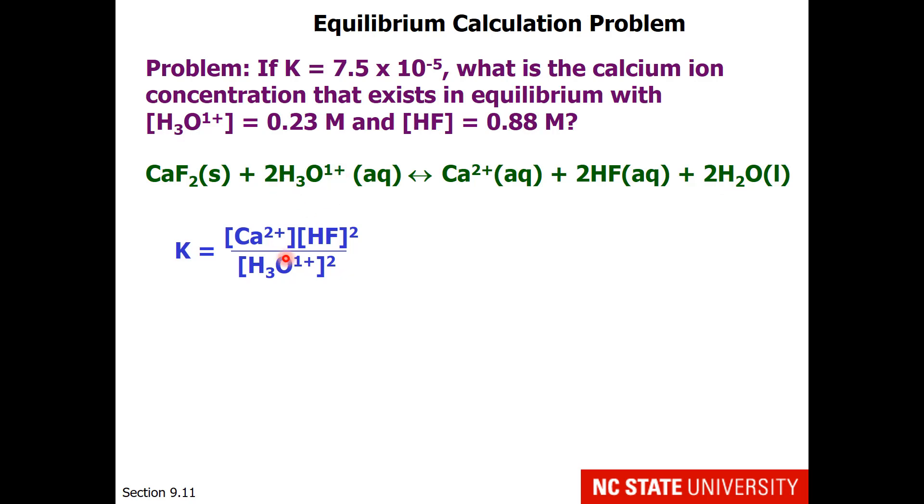This hydronium ion we will include as squared, but we are not going to worry about the calcium fluoride solid still sitting in the bottom of the flask. Now we should rearrange this to get calcium 2 plus isolated on just one side. There we go. Now this is just a matter of substituting our values.